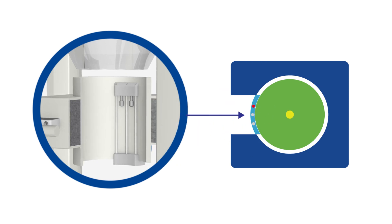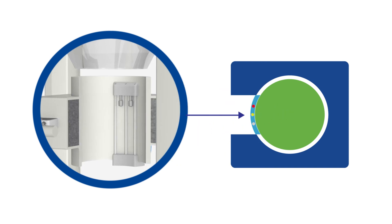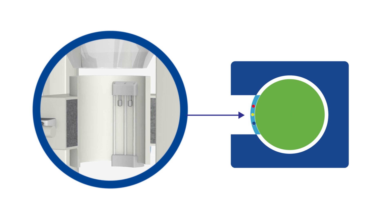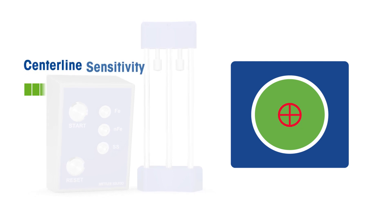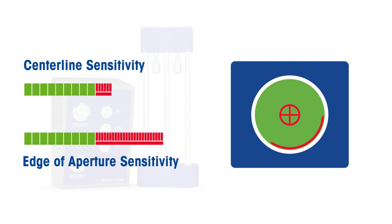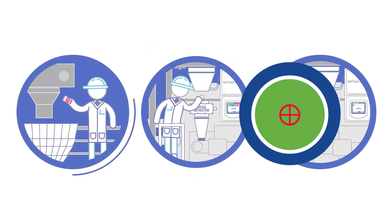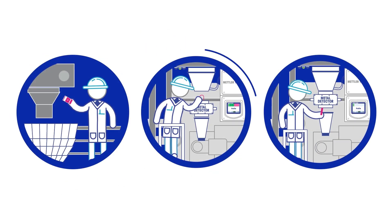ATS is the only test method that we believe confirms centreline sensitivity whilst using physical test pieces, as instructed in many industry standards. The centreline is the least sensitive part of a metal detector, and ATS uses an algorithm that correlates centreline sensitivity with edge of aperture sensitivity, eliminating the random nature of vertical metal detector testing.